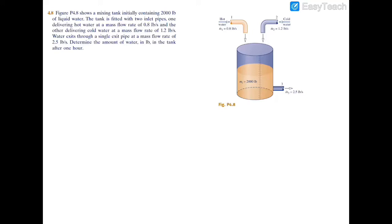Here we have a pretty simple problem. Basically we're working with a mixing tank right over here. We have an initial amount of mass, we're going to call it 2000 pounds of mass of water in this tank, and we have an inlet right over here of hot water entering this mixing tank. So we have 0.8 pounds per second coming in from the hot pipe.